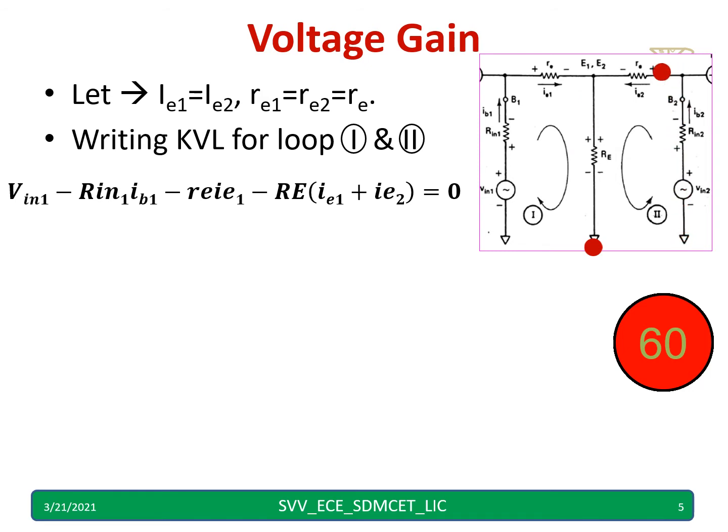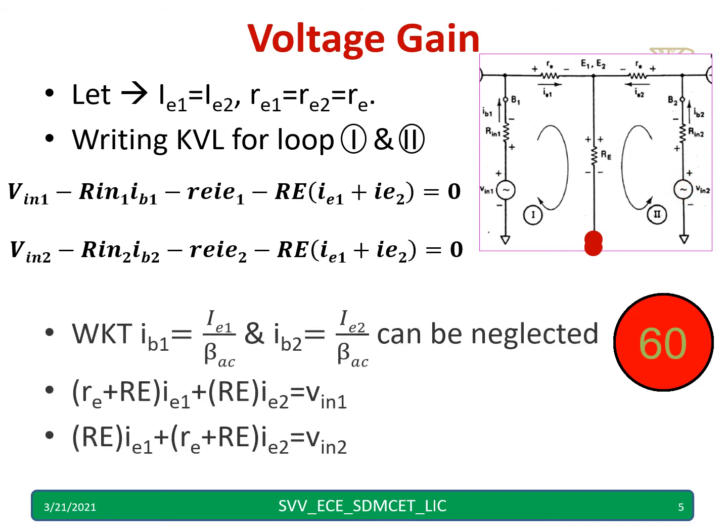Another loop - it is almost the same equation, but instead of VIN1, now I have a VIN2 source. We know that IB1 equal to IE1 by beta AC, IB2 equal to IE2 by beta AC. And these can be neglected. So I can rewrite the above two equations like this. You can pause the video and copy down. RE plus RE into IE1 plus RE into IE2 equal to VIN1. RE into IE1 plus RE plus RE into IE2 equal to VIN2.